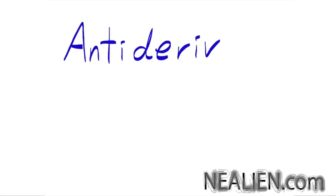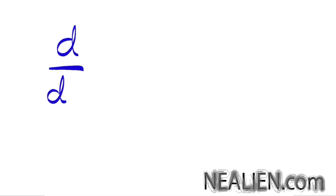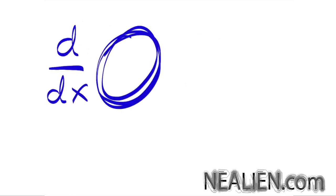And the antiderivative of x. So basically the antiderivative is the thing that when you take the derivative of it gives you what you're looking for. So in this case we're taking the derivative of something and it's going to give us x. We want to figure out what the something is, the thing in that blank circle.